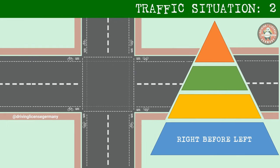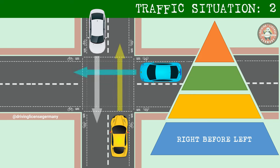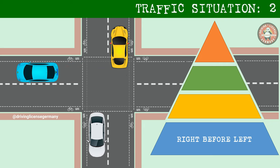Now let us see we have three vehicles coming from three different roads: a yellow car, a blue car, and a white car. For the yellow car, blue is on the right, so the yellow car must wait and allow the blue car to drive first. But for the blue car, the white car is on the right, so the blue car must wait and let the white car drive first. Finally, here is the order: first the white car drives, then the blue car, and finally the yellow car. It doesn't matter from where the cars are coming — they must follow the sequence according to the rule right before left.